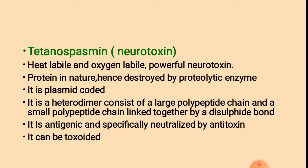Tetanospasmin is a neurotoxin produced by Clostridium tetani. It is a heat-labile and oxygen-labile, powerful neurotoxin, highly proteinaceous in nature, and therefore destroyed by proteolytic enzymes. It is a plasmid-encoded toxin. It is a heterodimer consisting of a large polypeptide chain and a small polypeptide chain linked together by a disulfide bond. It is antigenic, specifically neutralized by antitoxin, and can be toxoided.